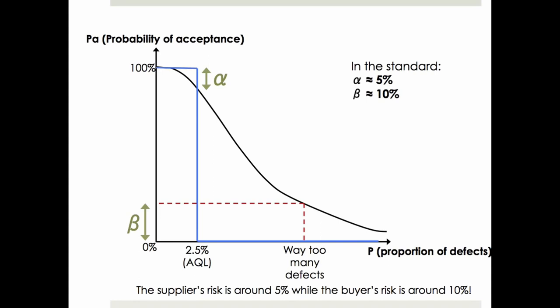Why is this the case? Because the standard is designed for lot-by-lot inspections — the case where a buyer keeps buying from the same supplier and the process average is good. The standard assumes that the number of defects in the whole batch is generally acceptable to the buyer, and it just wants to reject the cases where there are big problems.